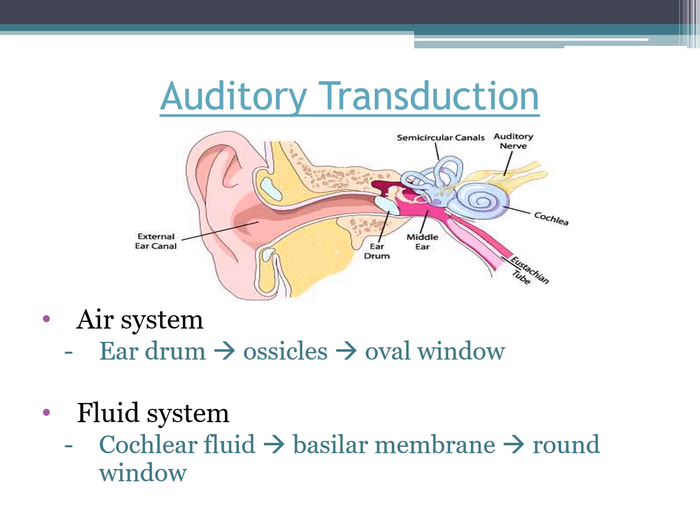A reminder of the full pathway: we're moving from an air system — information coming through the air, captured by the pinna, funneled down the auditory canal, hitting the eardrum, communicating to the ossicles. The ossicles are pushing and pulling on the oval window, getting us into a fluid system. The cochlear fluid, with its waves, is affecting the basilar membrane, and that wave comes back down to hit the round window.